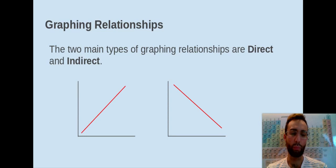And then your indirect, as our x increases, our y is going to decrease. It's also known as an inverse relationship.